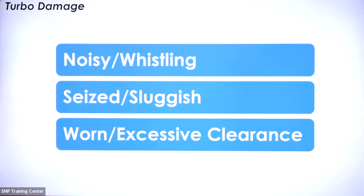When we do have turbo damage or a worn-out turbo, common complaints include noisy or whistling sounds coming from the turbo. Often the noise comes from air or gas leakage due to pre-turbine exhaust gas or an air boost leak. Check all your joints, hose connections, and make sure they're tight. If they are and the noise continues, check the turbocharger clearances and wheels for housing contact.